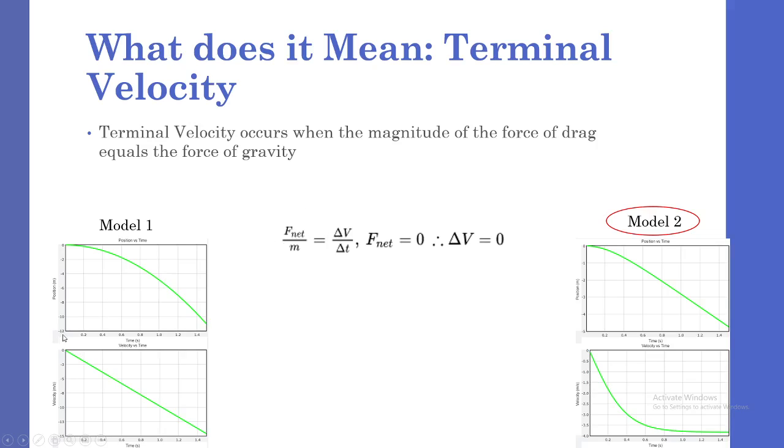This is reflected in our velocity graphs. So for model two, which considers the force of drag, we see that eventually the velocity reaches a constant slope, which shows that the delta v is equal to zero.